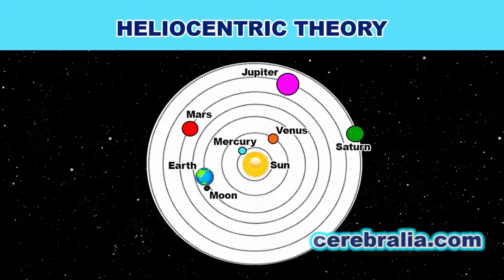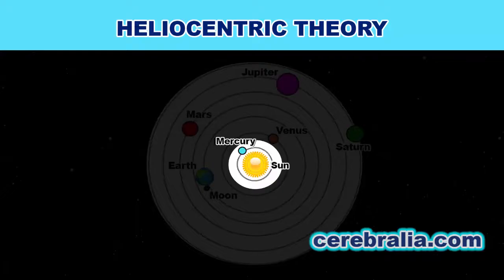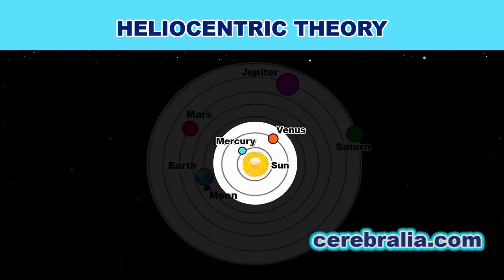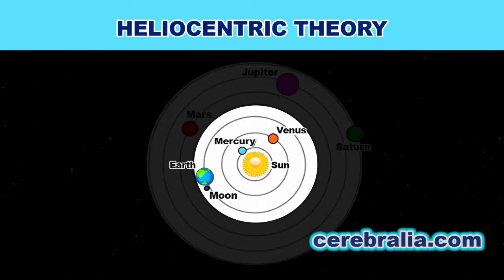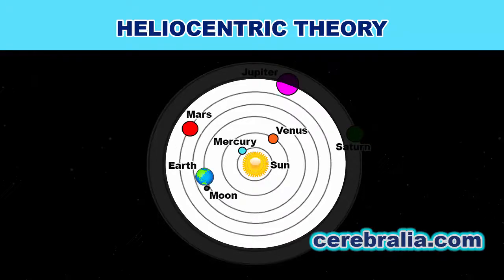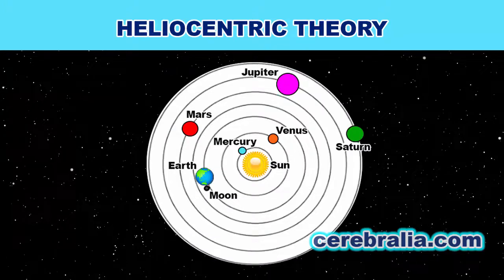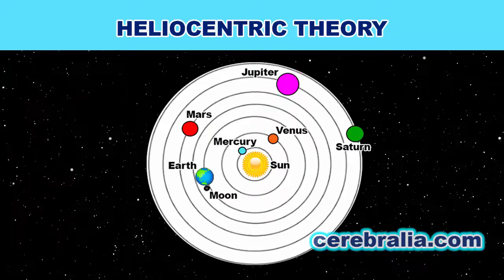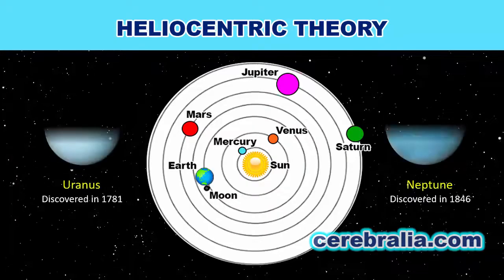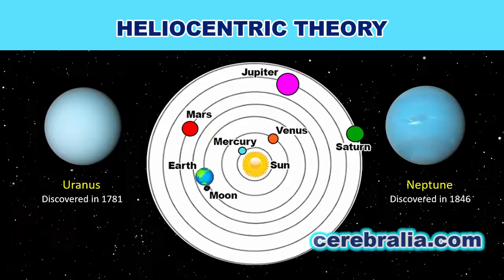The planets were in the following order from the Sun: Mercury was in a circular orbit closest to the Sun, Venus a little further out, the Earth was the third planet from the Sun, and the Moon is in orbit around the Earth, not the Sun. Then Mars, beyond that Jupiter and Saturn. At that time, only 6 planets were known. Uranus and Neptune were discovered years later.